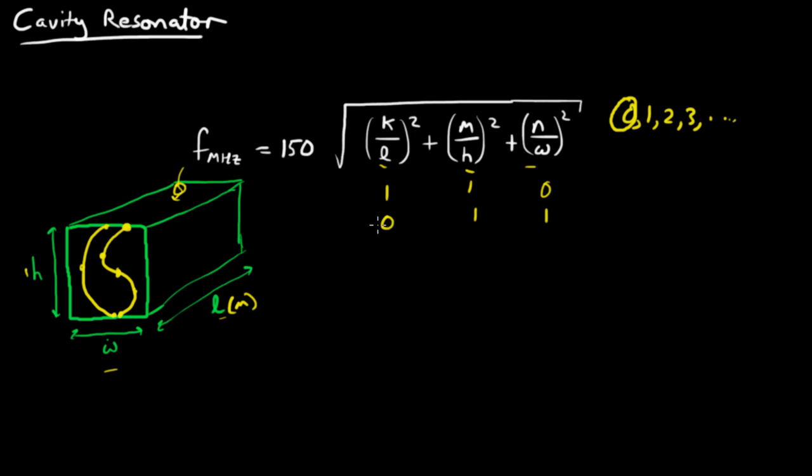In the case where one of the integers is zero, we're talking about just the face of a box—a 2D case. When all the integers are non-zero, we're talking about a 3D volumetric object.